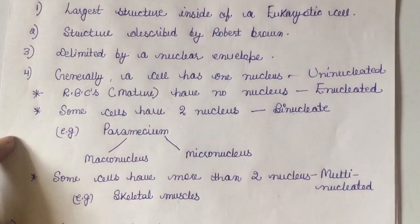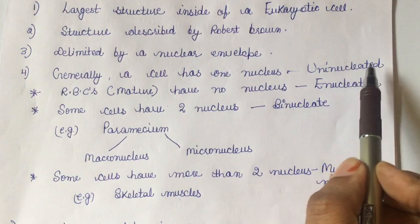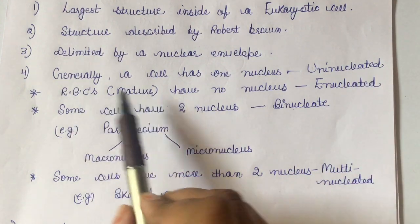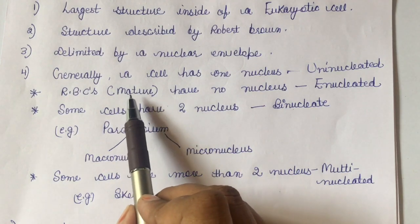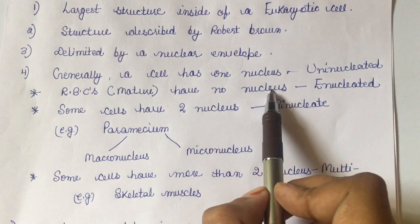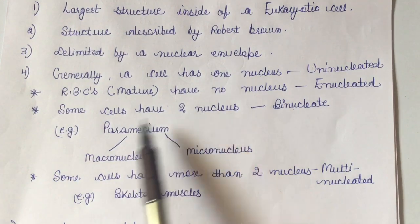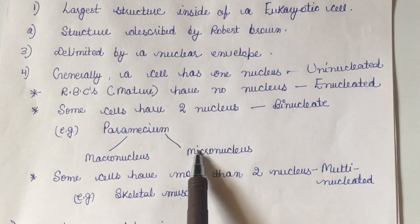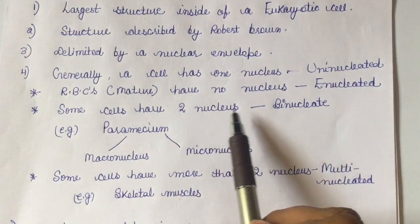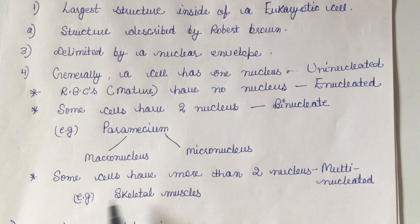Generally a cell has one nucleus, and if the cell has one nucleus it is called a uni-nucleated cell. In the case of mature RBCs, they have no nucleus and such cells are called enucleated cells. If cells have two nuclei — for example in paramecium, which has both a macronucleus and micronucleus with distinct functions — they are called binucleated cells. Some cells have more than two nuclei; these are called multinucleated cells.